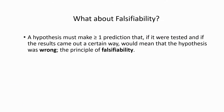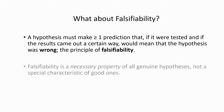Now, what about falsifiability? A hypothesis must make at least one prediction that, if it were tested and the results came out a certain way, would mean that the hypothesis was wrong. This is the principle of falsifiability. Falsifiability is a necessary property of all genuine hypotheses, not a special characteristic of the good ones, so we're going to assume that falsifiability is true of all of the hypotheses that we'll refer to.